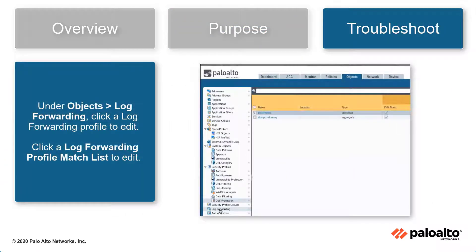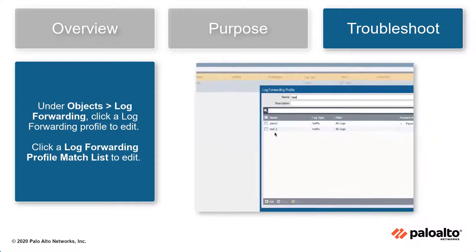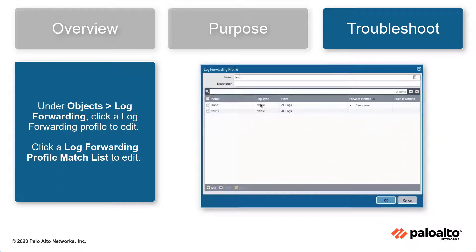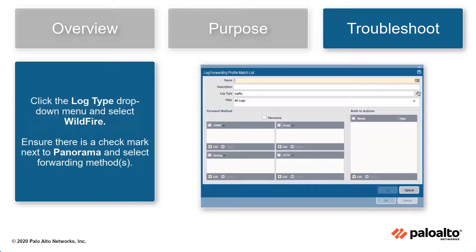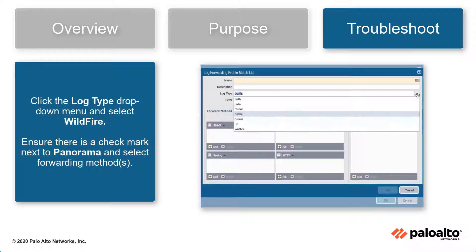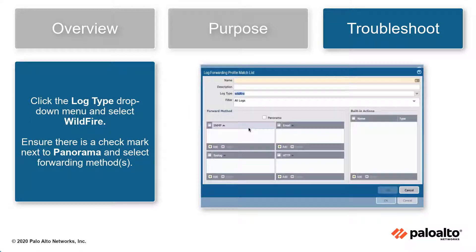Under Objects, Log Forwarding, click a log forwarding profile to edit. Click a log forwarding profile match list to edit. Click the drop-down menu next to the log type and change it to a more granular configuration such as WildFire.